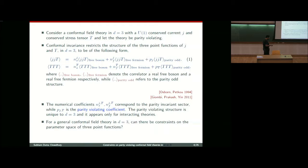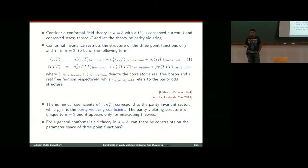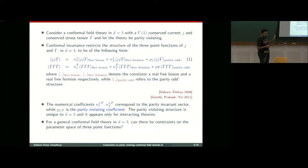Conformal invariance restricts the structure of three-point functions in such theories. This is the JJT and this is the TTT structure, where the subscript 'free boson' denotes that this is the correlator for a real free boson, while the subscript 'free fermion' denotes the correlator for real free fermions. This parity-odd structure is unique to D equals 3. The free boson and free fermion structures are the parity-invariant ones, first found by Osborne and Petkou. The new addition was by Jombi, Prakash, and Yin.